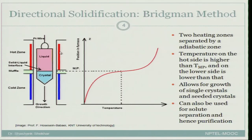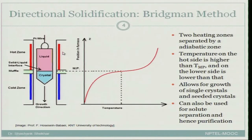The first is the Bridgman method. In this, you have two zones of furnace: one kept at higher temperature, the other at lower temperature. The upper zone is above the melting point of the material and the lower zone is below the melting point. Inside you have a crucible with the material you want to melt and solidify in a directional way. Initially, the crucible is in the top zone, so the material is in a molten state. Then, very slowly — at a rate of about 5 to 6 millimetres per hour — the crucible is pulled down, and a small region first enters the zone below the melting point, so solidification begins.